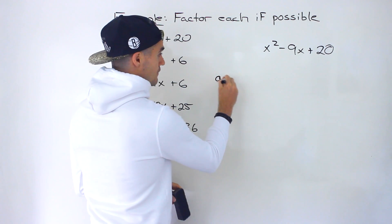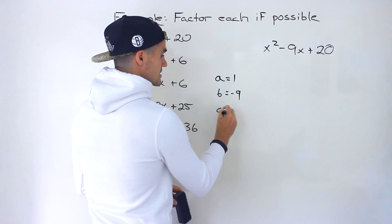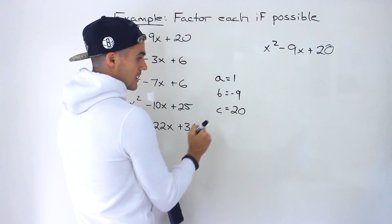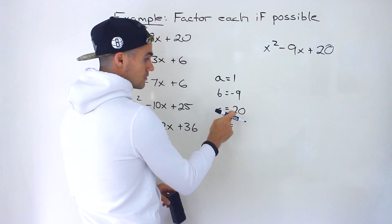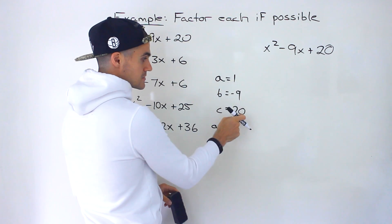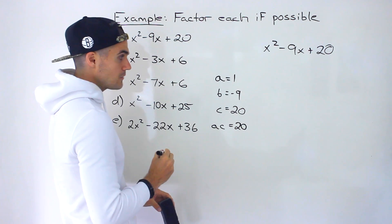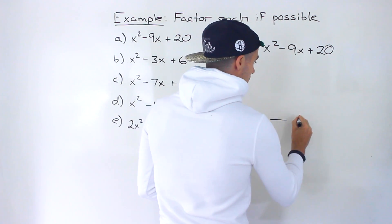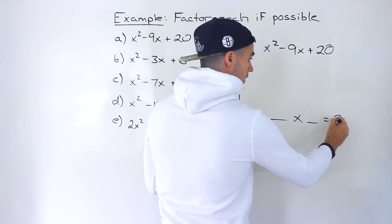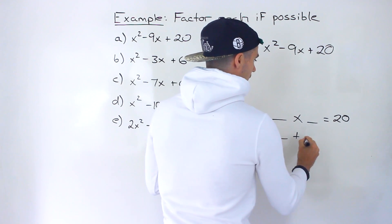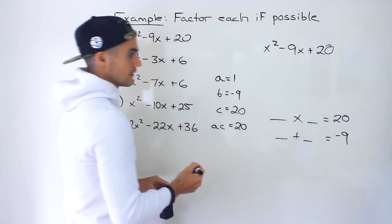The A value is 1, the B value is negative 9, and the C value is positive 20. First step: write out A, B, and C, then find the A·C value — that's 1 times 20, which gives us 20. So we need to figure out two numbers that multiply to that A·C value of 20 and then add up to that B value of negative 9.